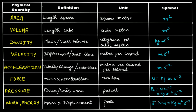For example, we have taken some of the physical quantities that we deal with in our scientific studies. So we have area, we have volume, we have density, we have velocity, we have acceleration, we have force, we have pressure and we have work and energy. These are some of the physical quantities which are not the basic physical quantities, and the units that we'll derive will use the SI units of those seven basic physical quantities.